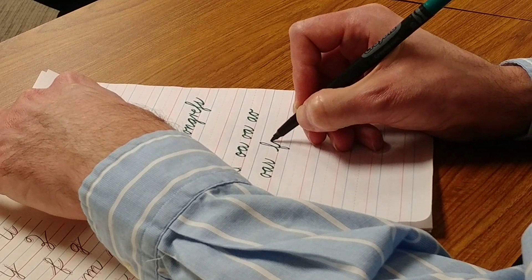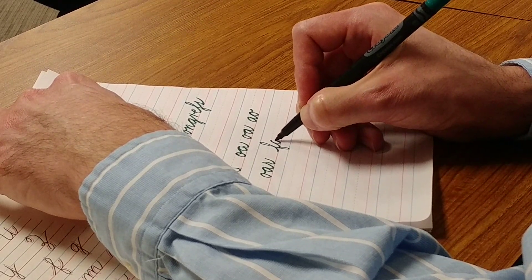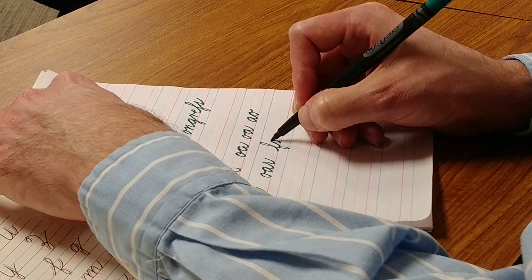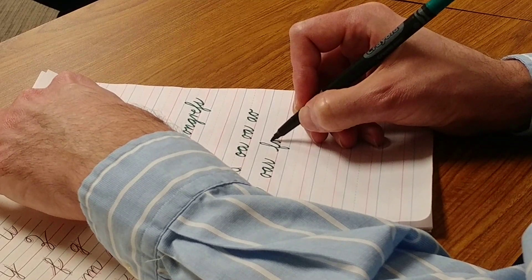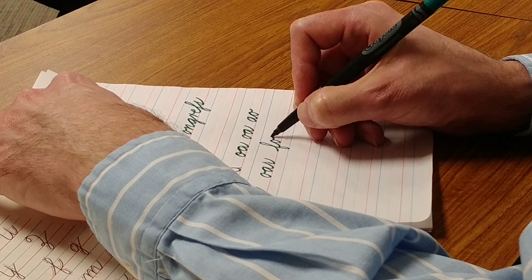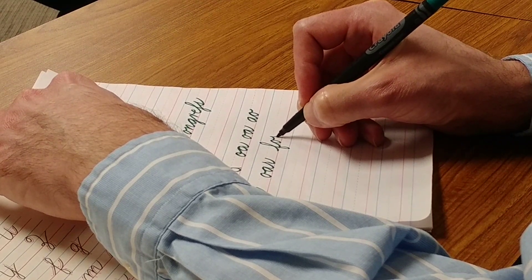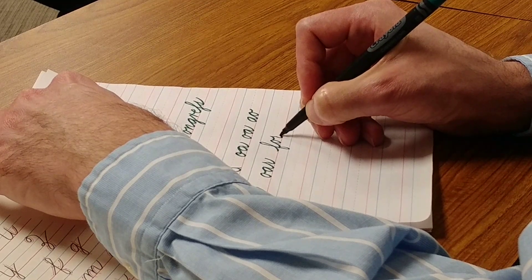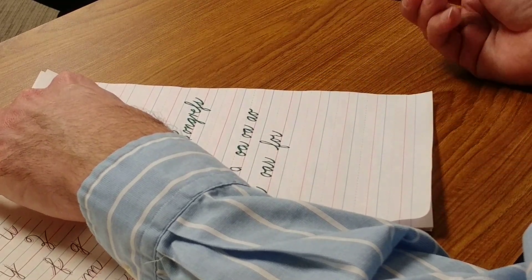On to the letter O. Down and under. Now, the next letter is R. I am not going to go back down to the baseline. I'm going to continue slightly past the midline, sloping to the right, slant to the base, finish with an under curve stroke.